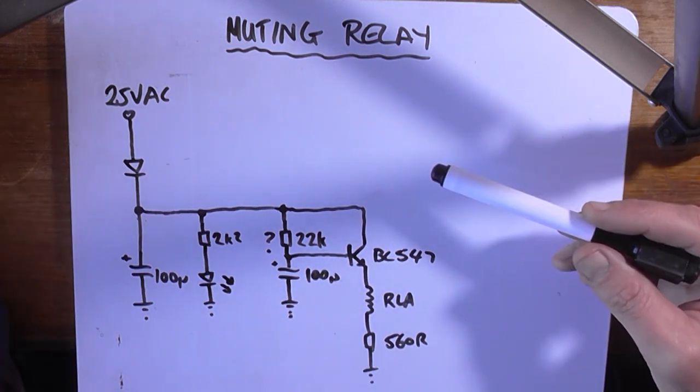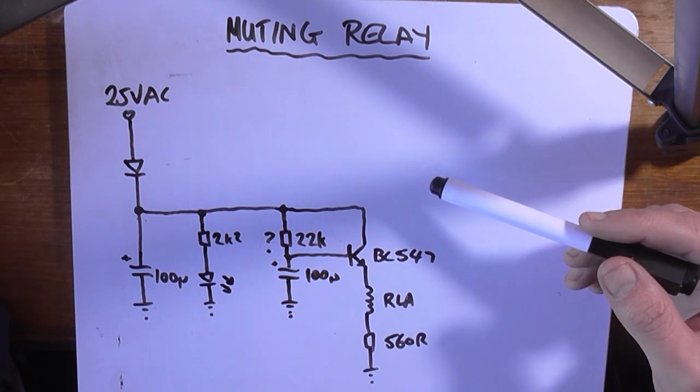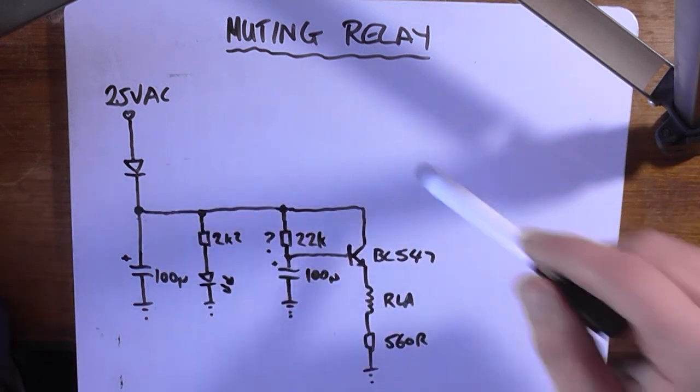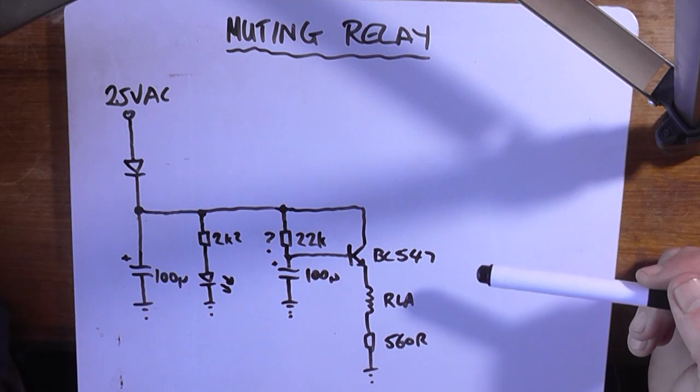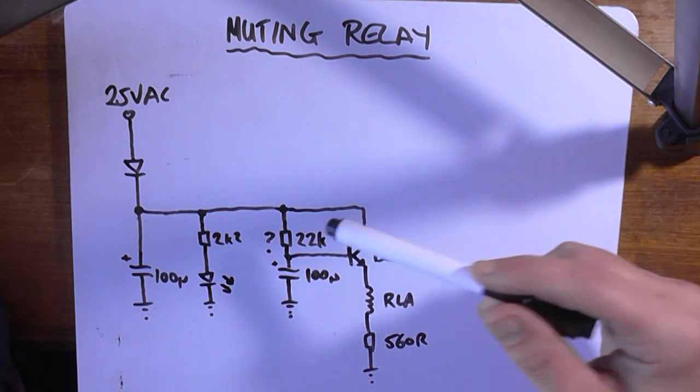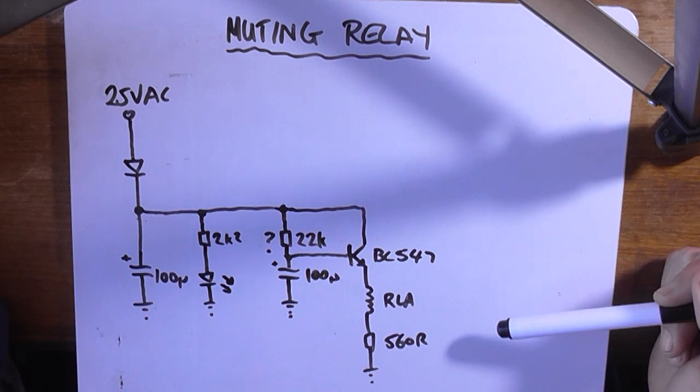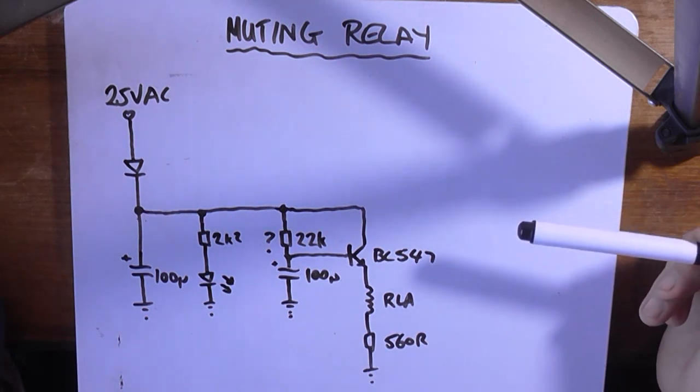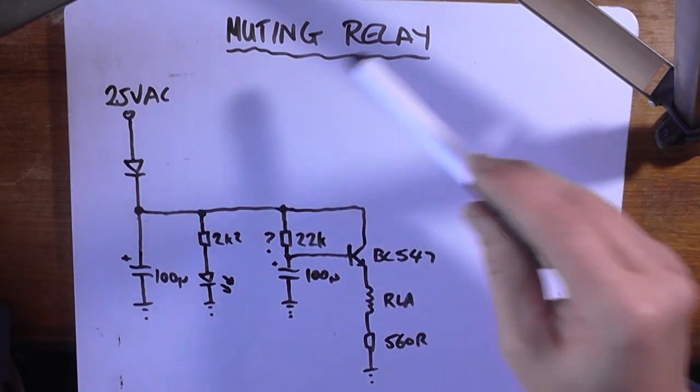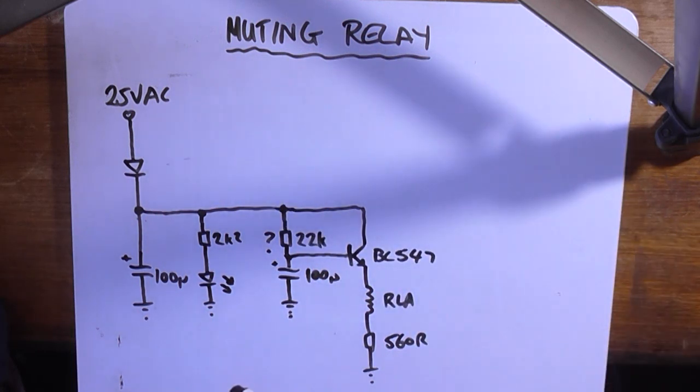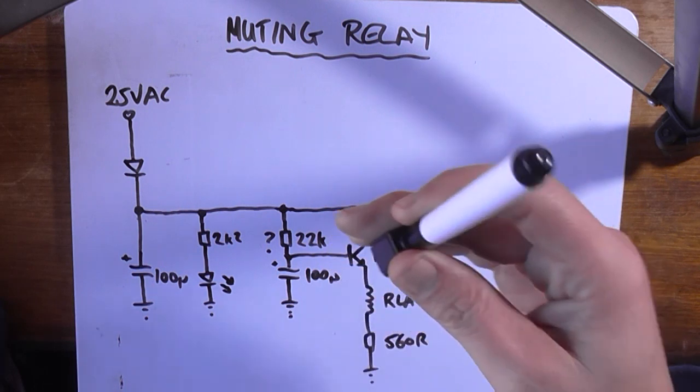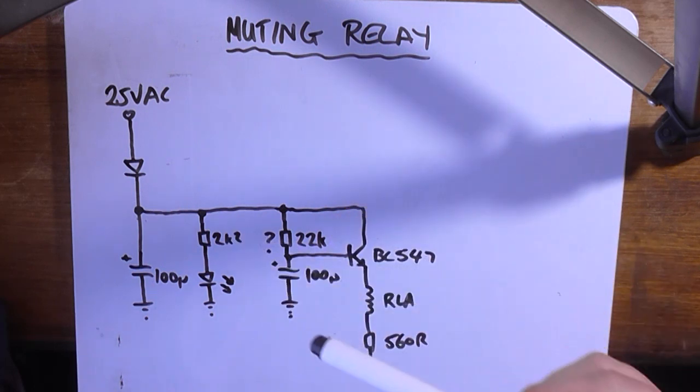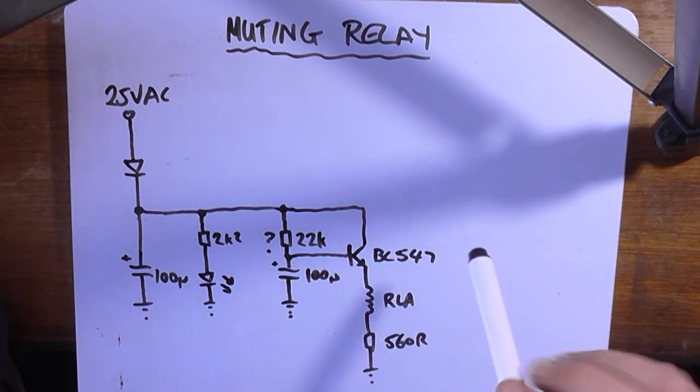I haven't had the PCBs made yet as the power supply one is subject to change. I want to check that the muting circuit is going to operate correctly with the values chosen before going to the expense of having the board made and finding out it doesn't work properly. We're looking at the muting section of that power supply that I've shown in the previous video. There will be a card up here to that video. There's also some other thoughts that I've had in the meantime and what changes I'm going to do which I'll explain at the end of the video.